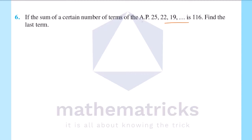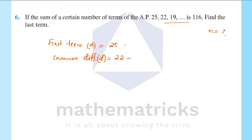The first term a equals 25. The common difference d equals the second term minus the first term, that is 22 minus 25, which equals minus 3. The sum S_n equals 116.